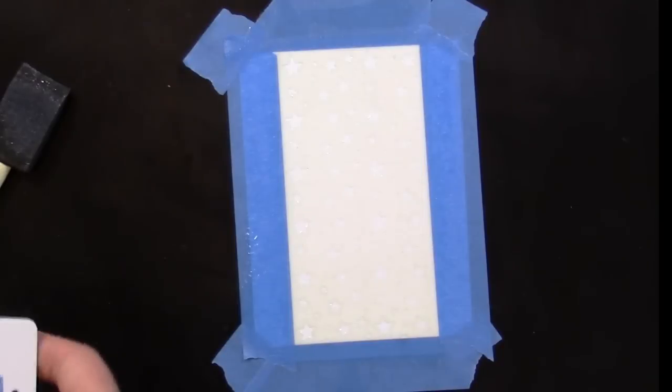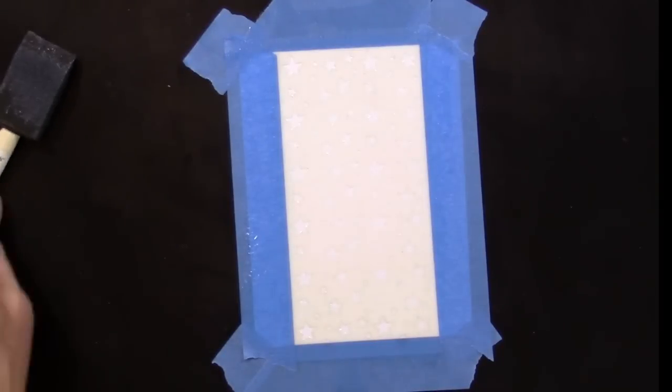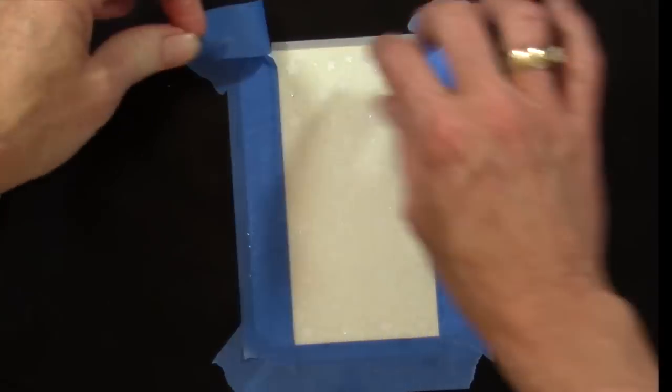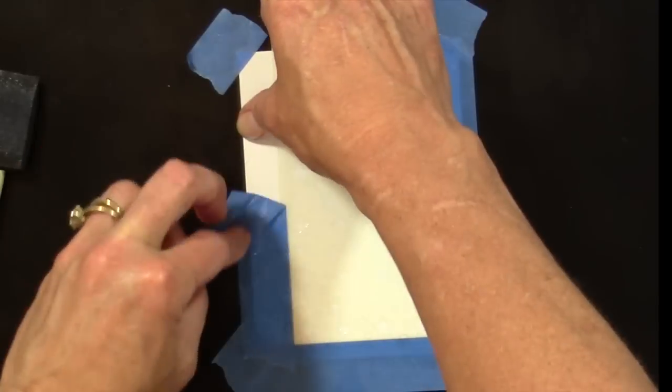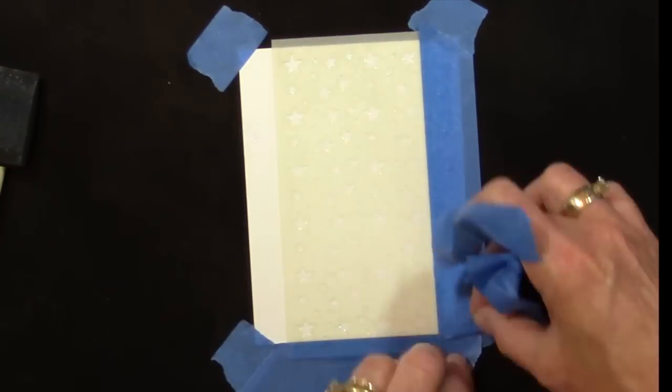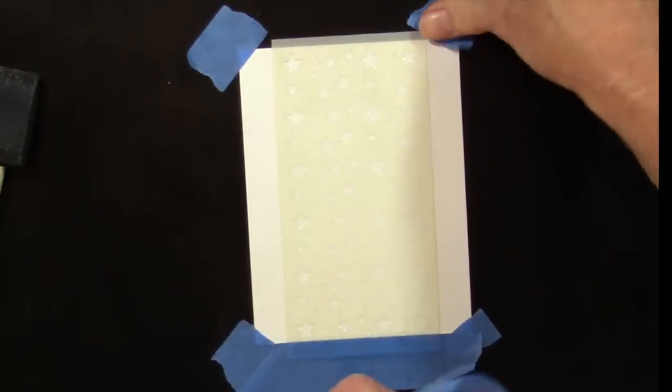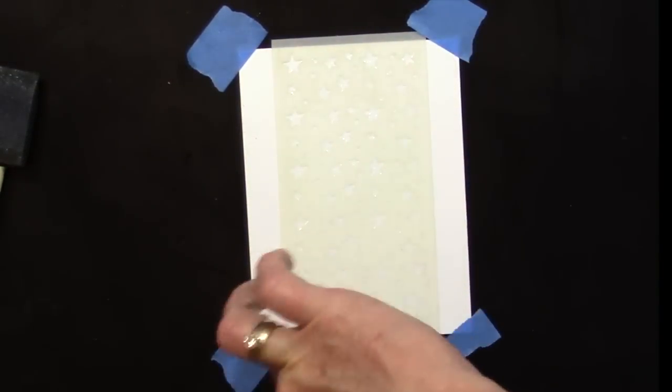You're going to let that set for about 15 seconds, and then you can remove the adhesive. Then you want to very carefully lift the stencil straight up.